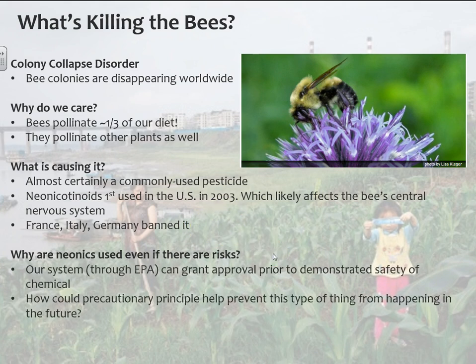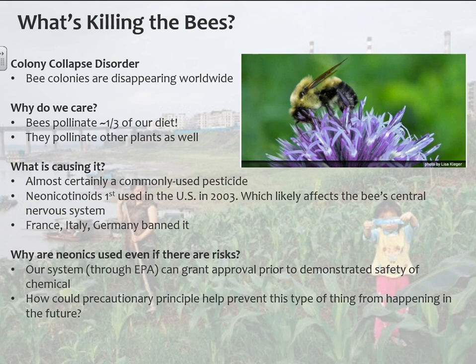Why are we using neonicotinoids? The EPA or USDA can actually approve the use of these chemicals before they're proven to be safe, which is pretty backwards. Whereas in Europe, they use the precautionary principle — in the EU they say you can't use that until you prove it's safe. In the U.S. it's more like: we're pretty sure it's safe, so you can go ahead and use it until we find out it's not. There are many examples of chemicals they thought were safe that turned out not to be, but that's just the way we do things in the U.S.